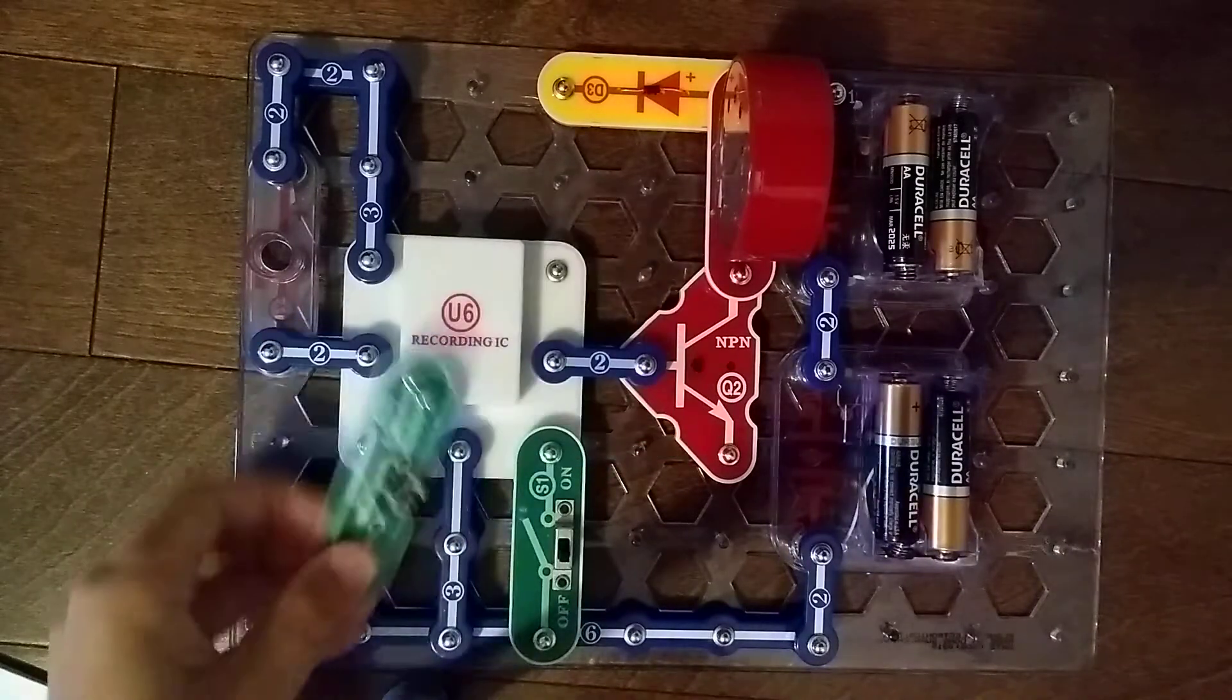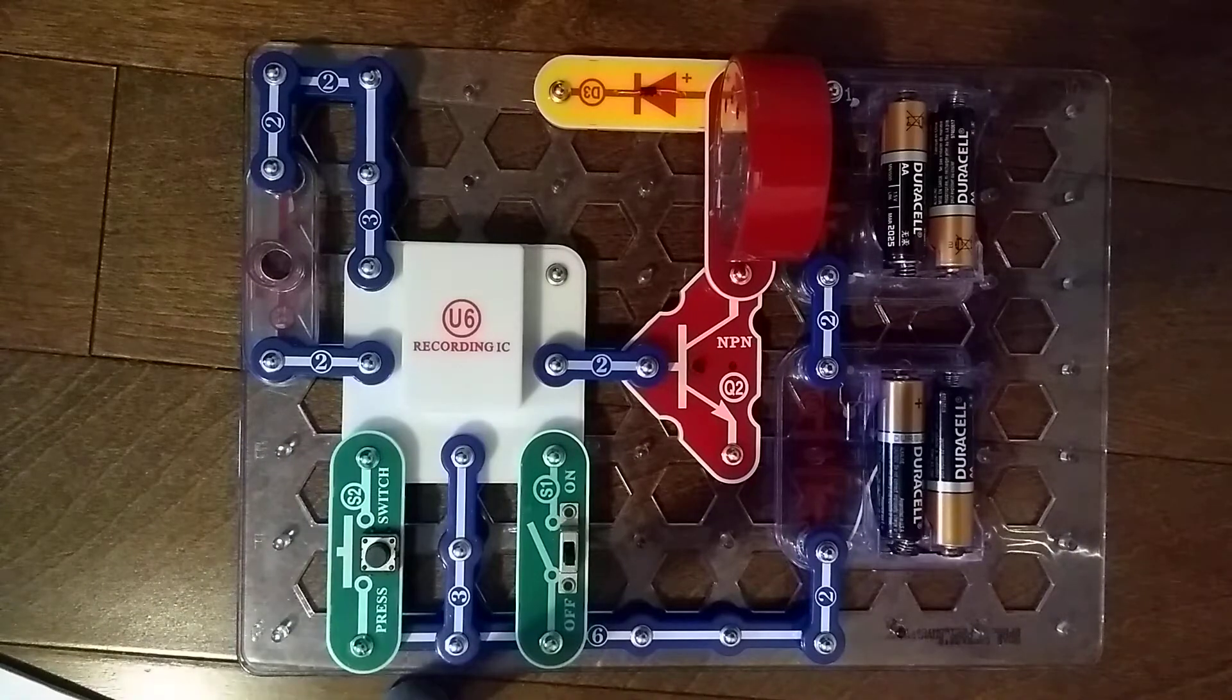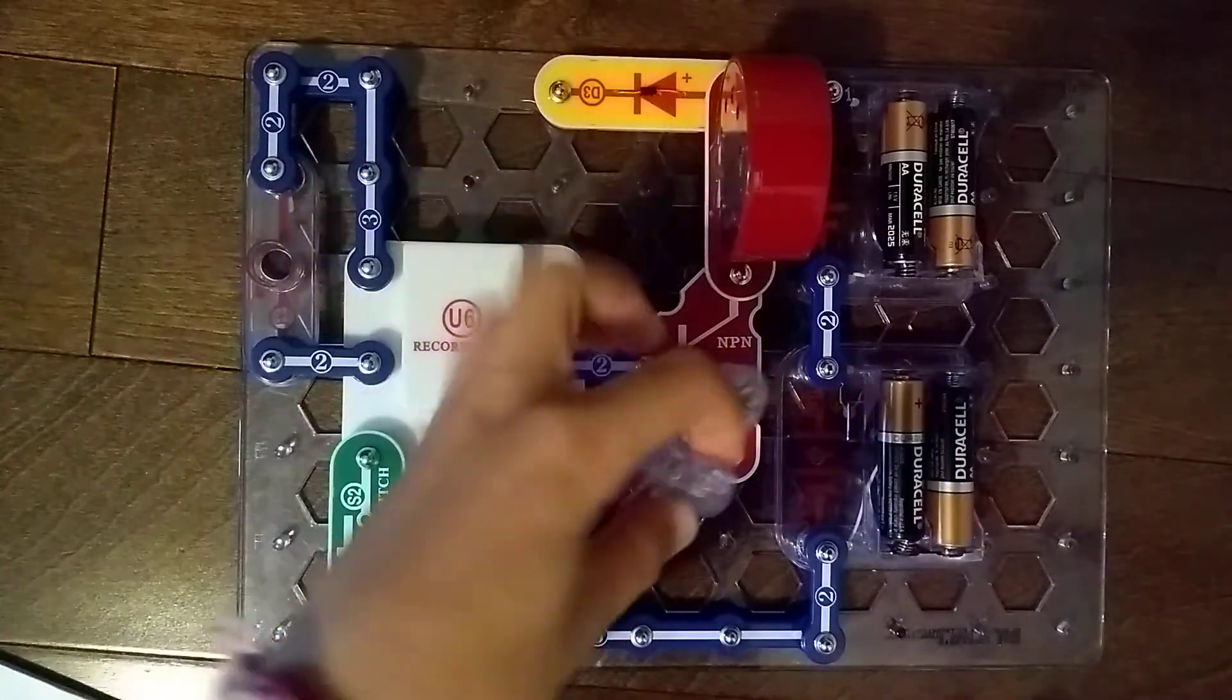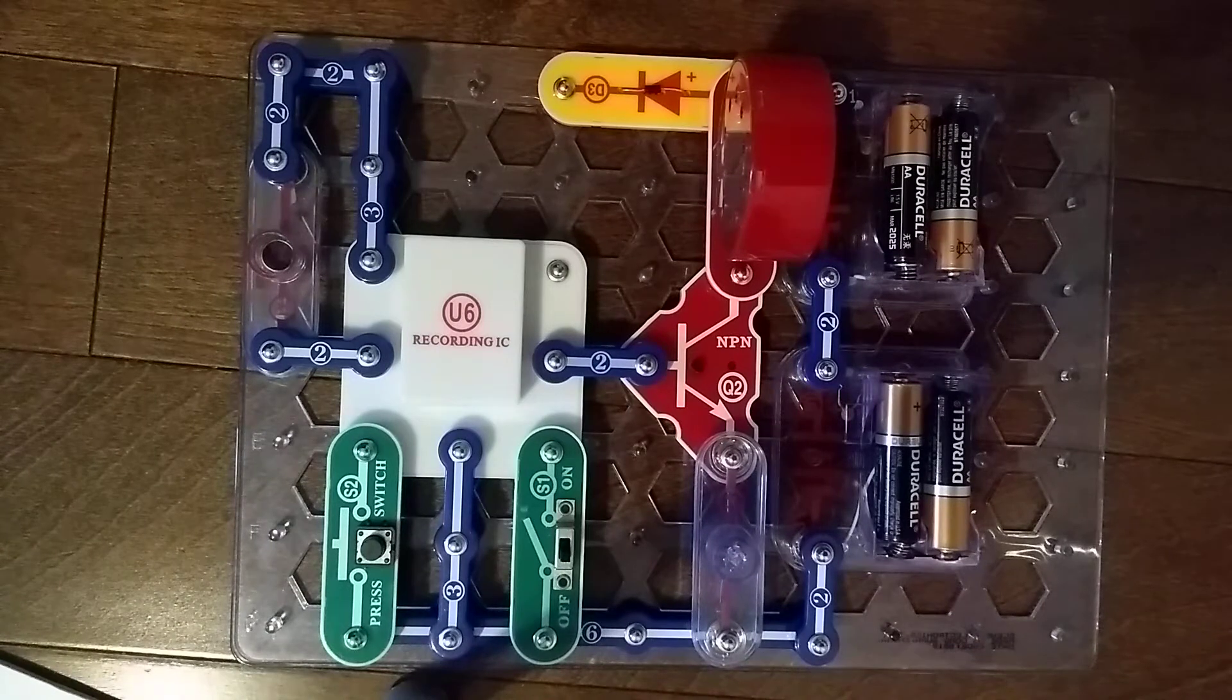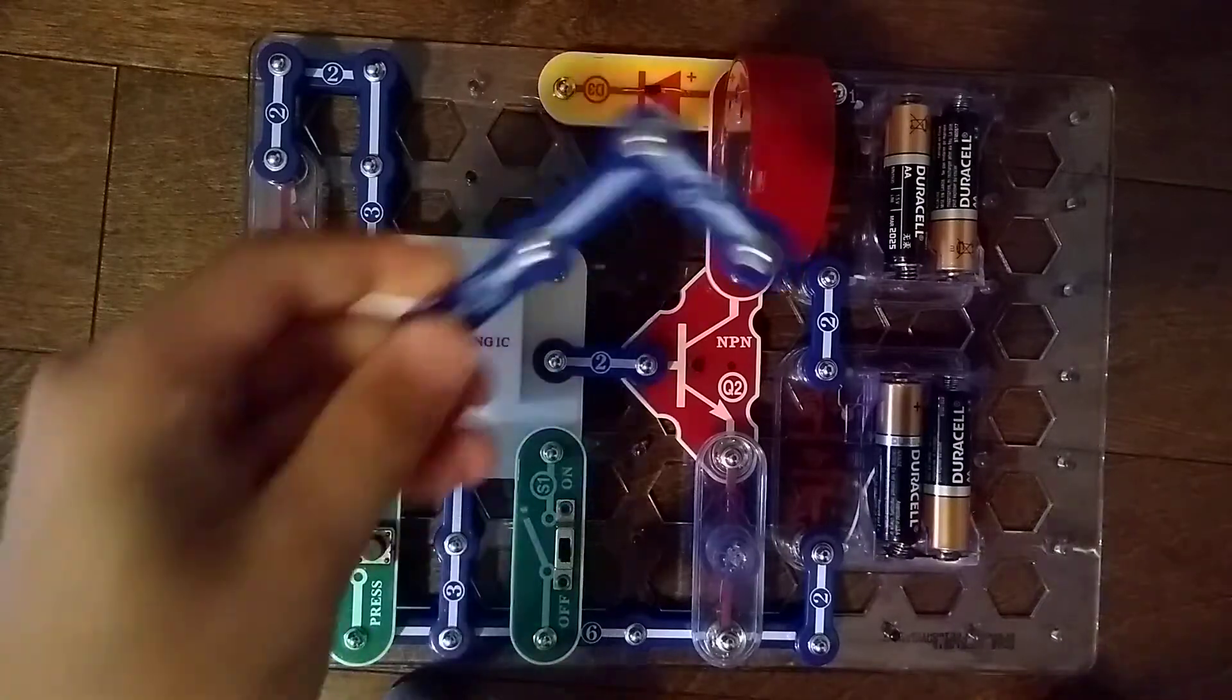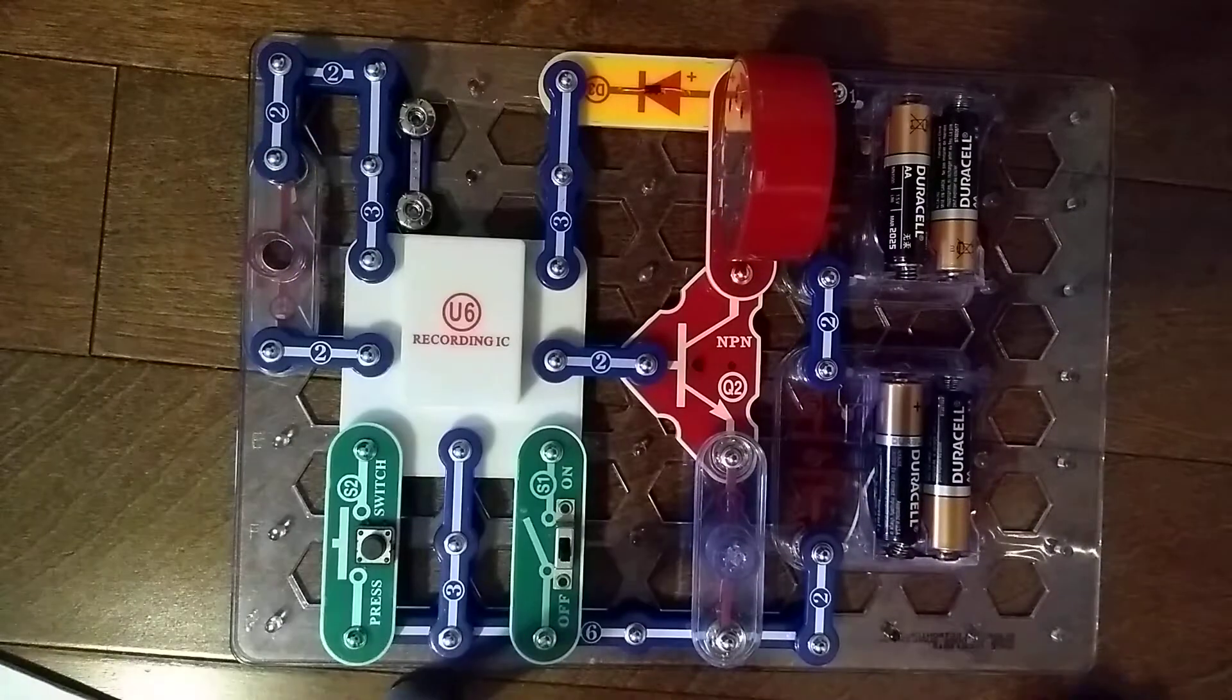Now, we'll place this S2 press switch right here. Okay. Now, we need the L2 lamp socket. There it is. L2. We'll go right here. And then final thing for layer 2 is a 3-snap wire. We'll go right here. That's it for layer 2.